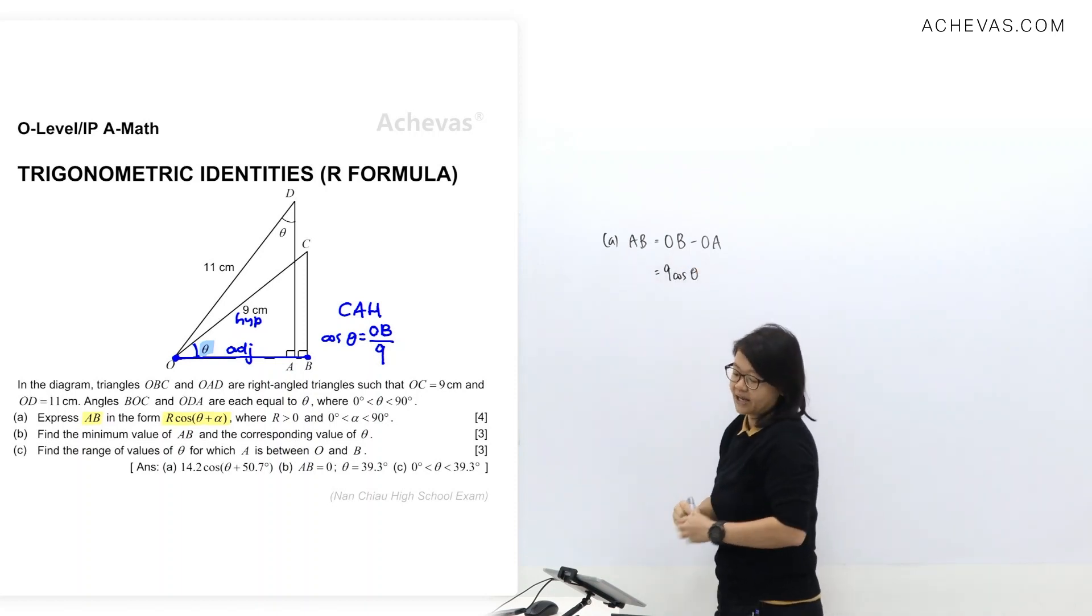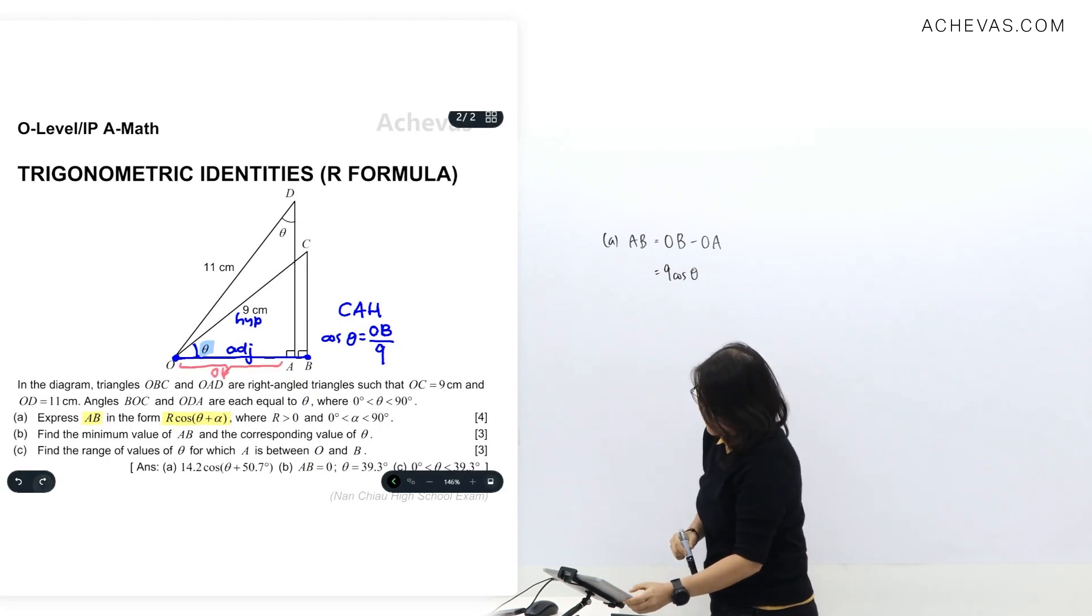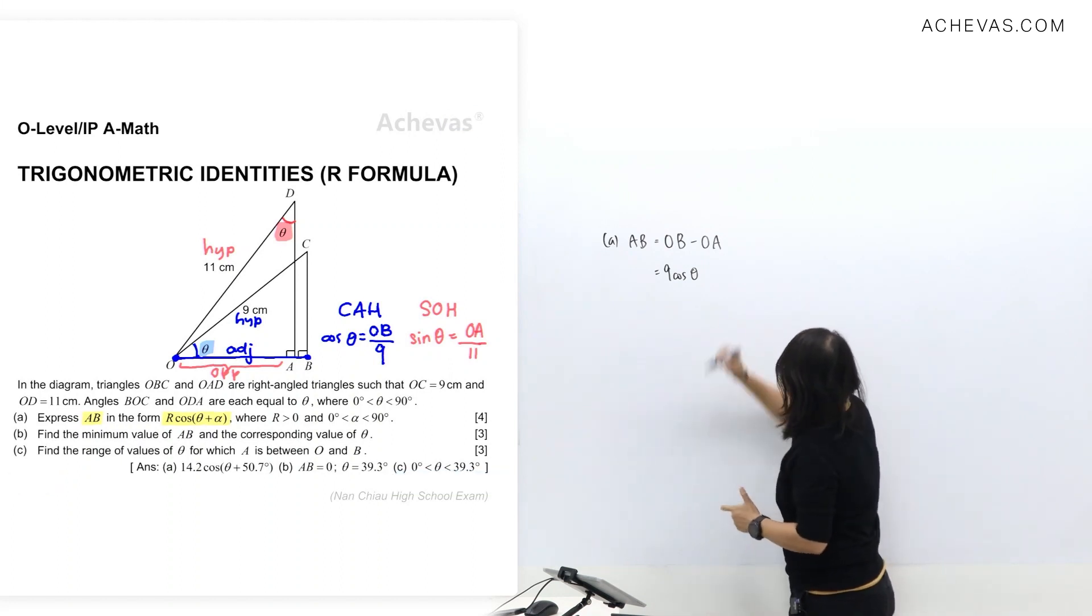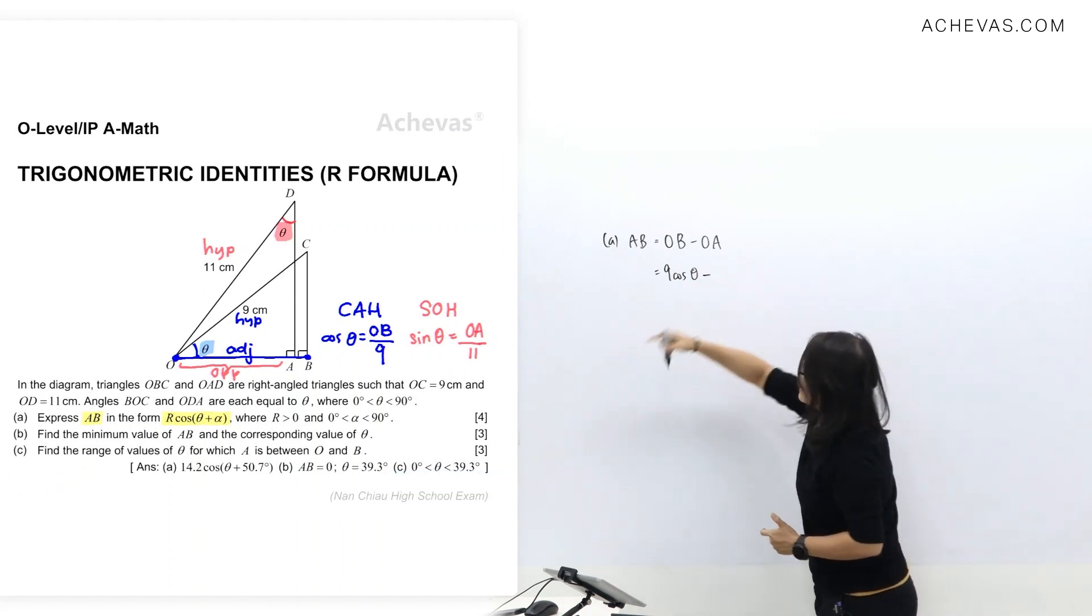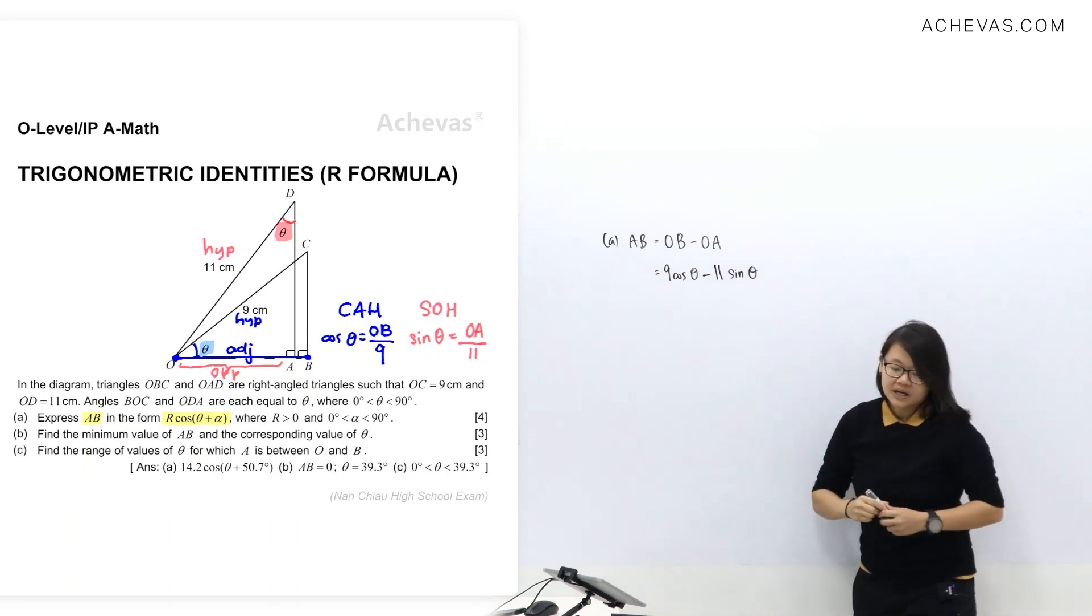Now let's take a look at length OA. Length OA is going to be the opposite side of this angle theta and I'm also given hypotenuse as 11. So I'm going to apply SOH whereby sin theta equals OA over 11. So I'm going to write down here then, OA equals 11 sin theta.